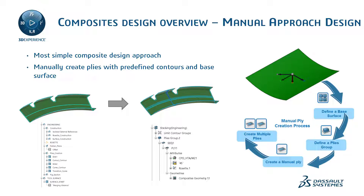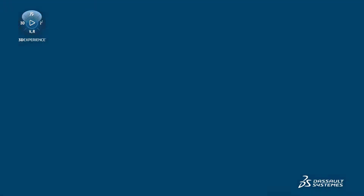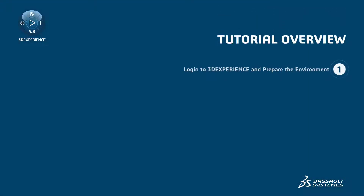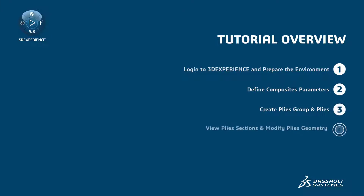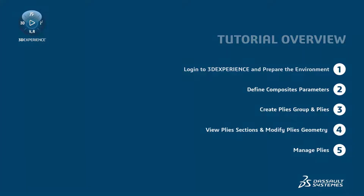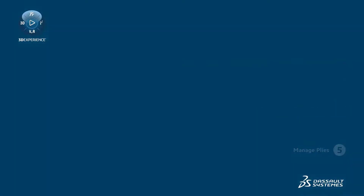For this tutorial, we will use this geometry — an engine part. Download the file attached to this tutorial and save it on your computer in a directory of your choice. By the end of this tutorial, you will be able to log into 3D Experience and prepare the environment, define composites parameters, create plies group and plies, view plies sections, modify plies geometry, and manage plies.